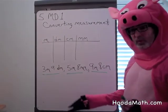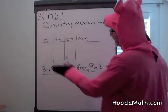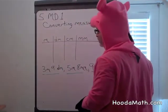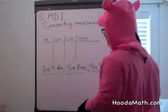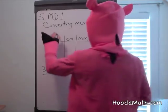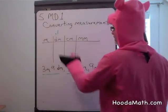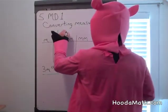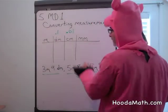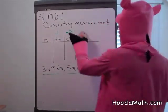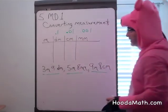We want to put those numbers together. Meters you can consider a unit, a whole, one. A decimeter is one-tenth. A centimeter is one one-hundredth of a meter. And a millimeter is one-thousandth of a meter.